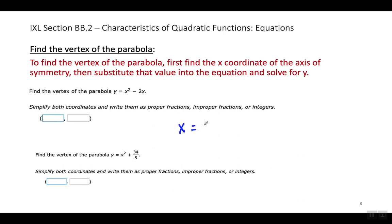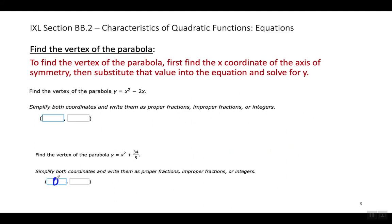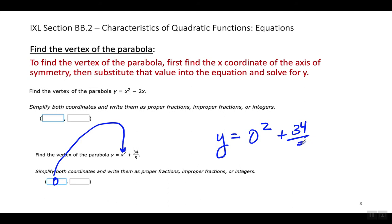Let me do another example — find the vertex of this parabola. First, I'm going to find the X coordinate by doing X equals negative B over 2A. In this example, A equals 1, B equals 0, and C equals 34 over 5. When I substitute those values into the formula for the axis of symmetry, I'm going to have negative 0 over 2 times 1. So the axis of symmetry is at X equals 0, which means the X coordinate of the vertex is 0. If X equals 0, then Y has to equal 34 over 5.